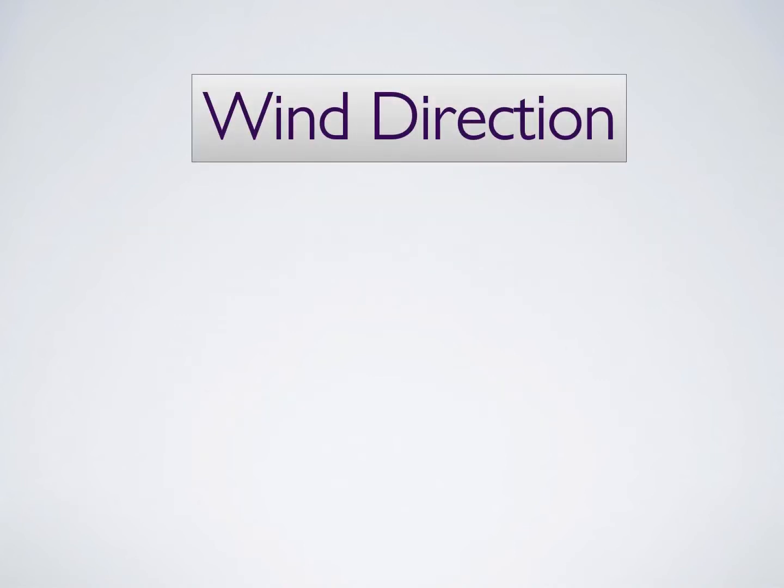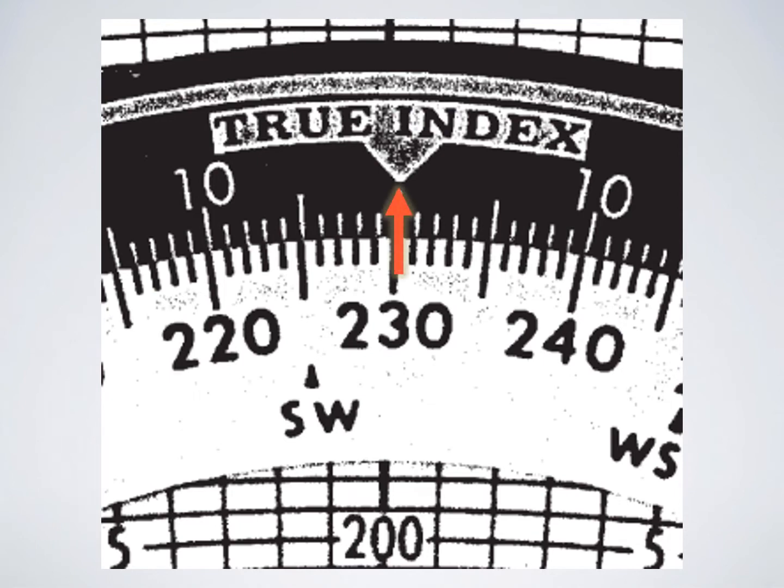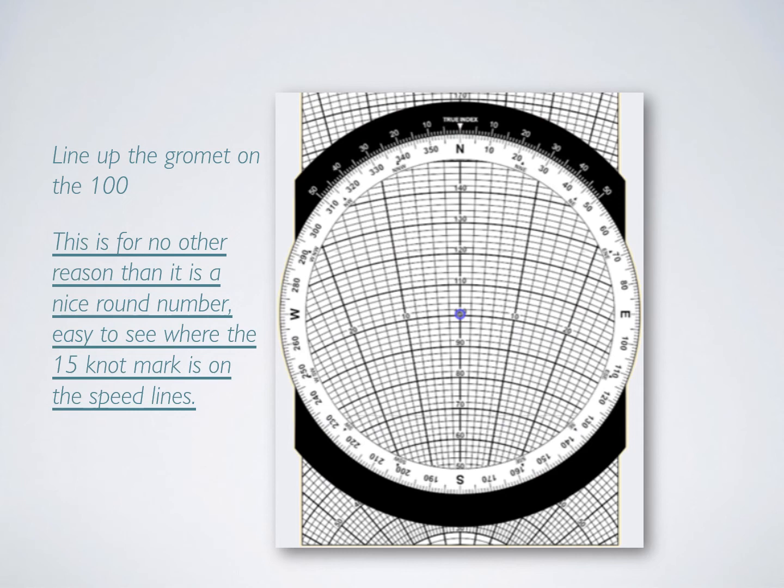What you need is wind direction and speed, typically derived from something like this. Line up the wind direction at the very top there in line with the true index triangle. Just line up the grommet with the horizontal line that represents 100 knots.